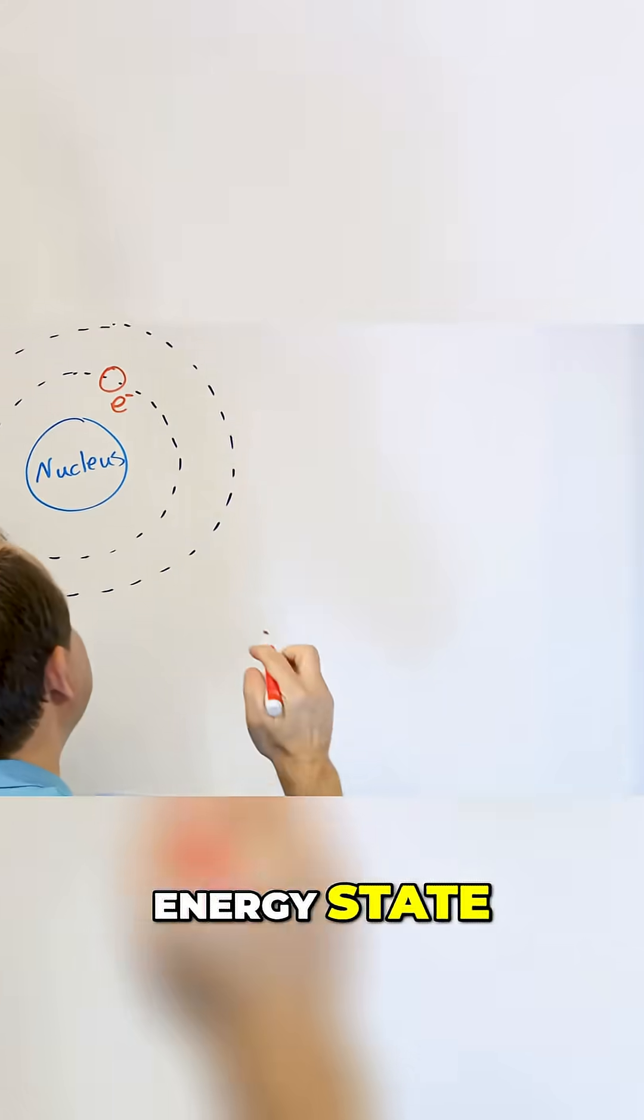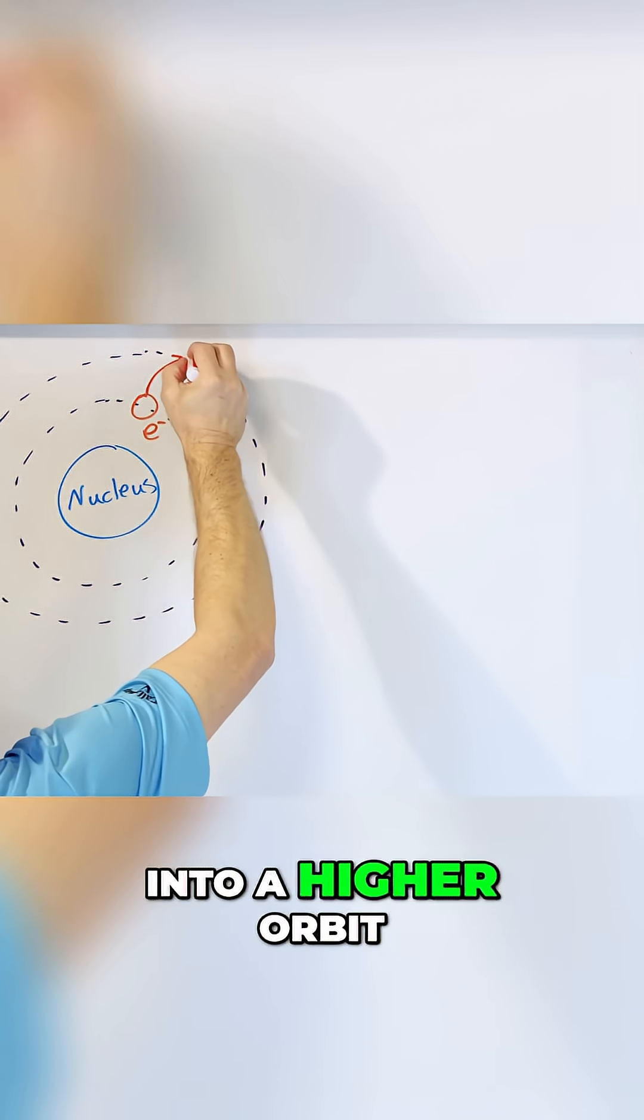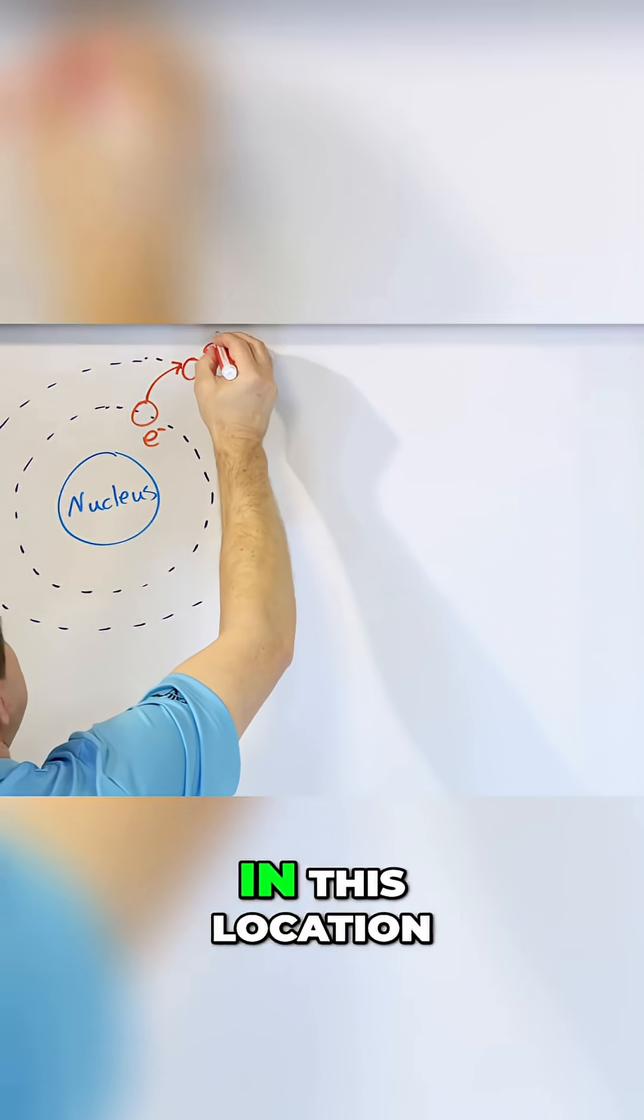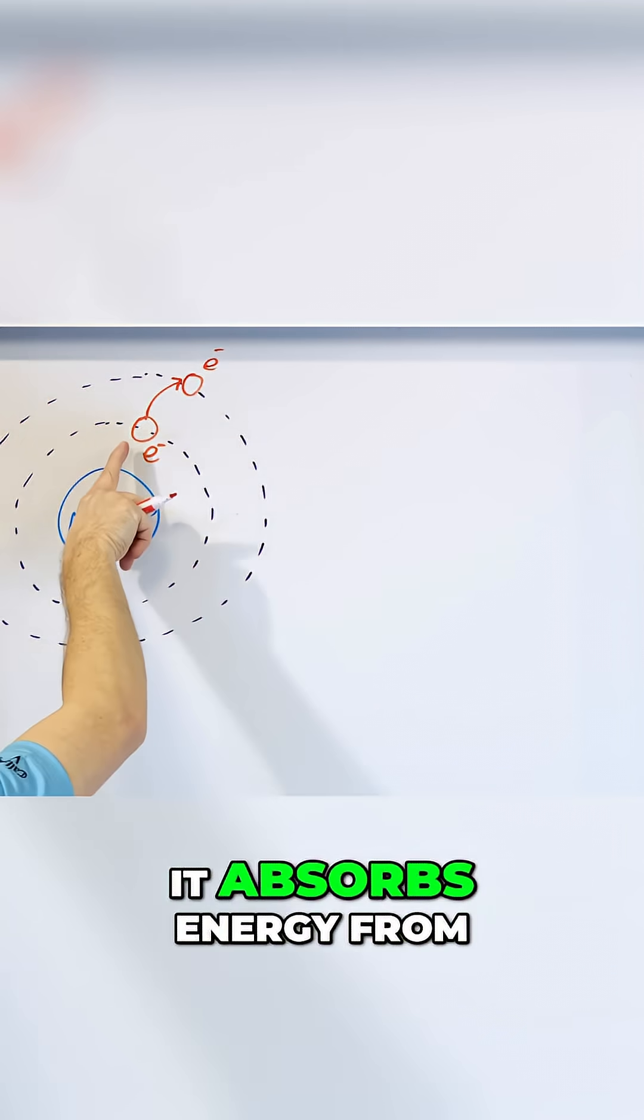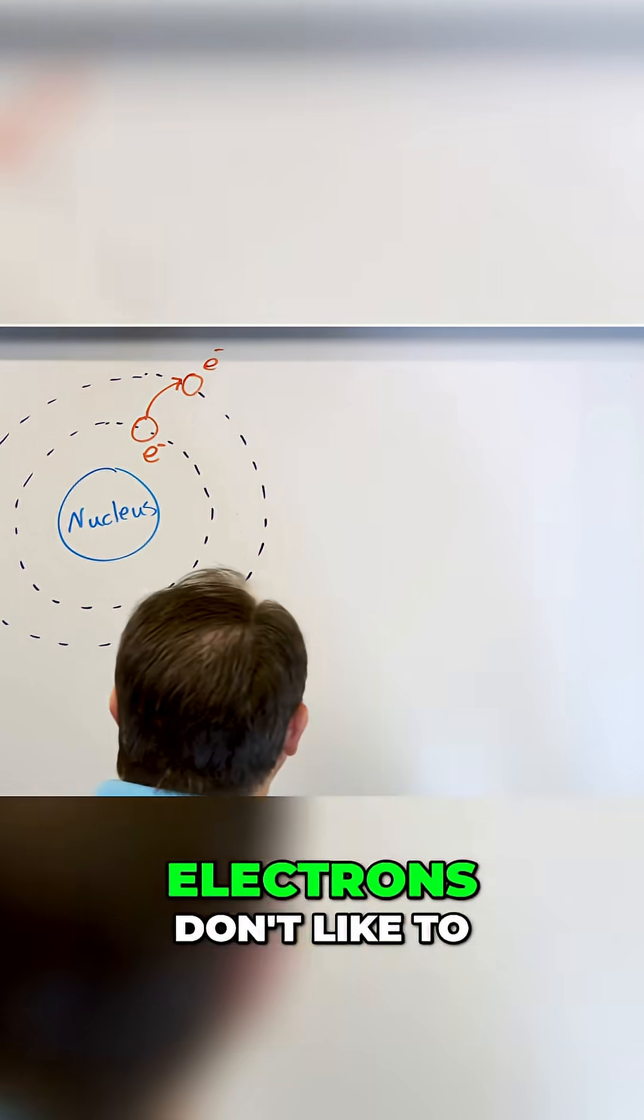When I say higher energy state, I literally mean that the electron jumps up into a higher orbit and it temporarily lives in this location. It absorbs energy from the fire and it goes up here. But you see, electrons don't like to stay in the high energy states.